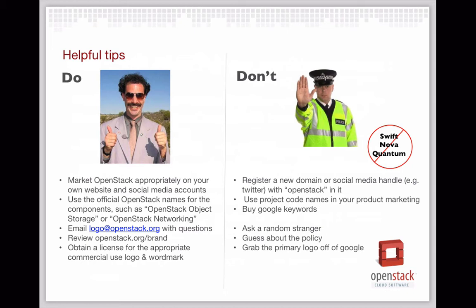When you're thinking about both the commercial and non-commercial use, you're basically looking for examples of what is and is not allowed under these policies. Certainly we want companies to talk about OpenStack, and there are appropriate ways to do that — depending on if you're doing product marketing or just talking about your community involvement — so that would be an example of a do. An example of a don't would be registering domain names or social media handles that have the word OpenStack in them. Another thing: when you're talking about your product and doing outbound product marketing, we ask that you use the official OpenStack names when talking about components or projects, such as OpenStack Object Storage or OpenStack Networking, as opposed to the project code names.